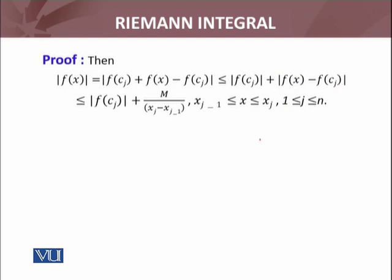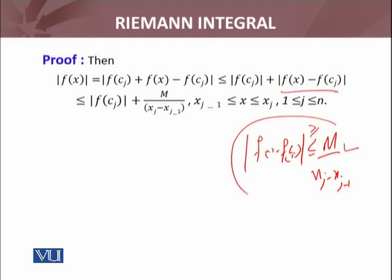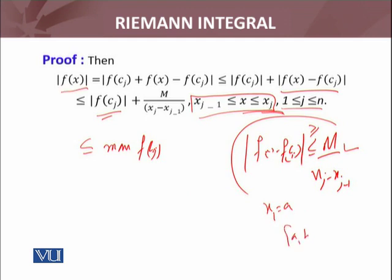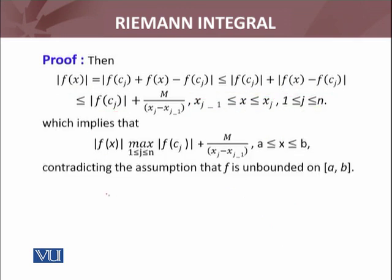Now the contradiction we supposed: |f(x) - f(c_j)| ≤ m/(x_j - x_{j-1}). We used the opposite of this here, and f(c_j) is in this interval. If I take the maximum of f(c_j), that will be always the maximum of f(c_j) where c_j is in this interval. I have shown that this is true for all j from 1 to n. It means when x_1 was there, that was my a, which implies that f(x) is bounded on the interval [a,b]. If this condition holds, which implies f(x) is less than or equal to this, contradicting the assumption that f is unbounded on the closed finite interval.